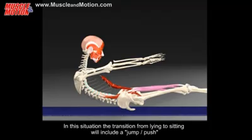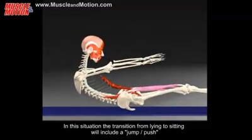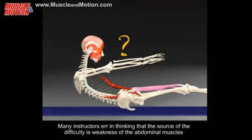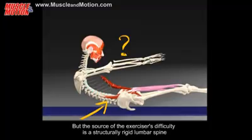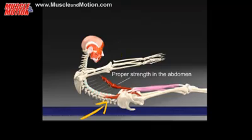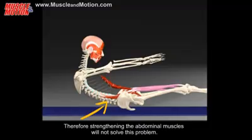Without a sequential arch it is simply impossible to perform the exercise properly. In this situation the transition from laying to sitting will include a jump or push. Many instructors err in thinking that the source of the difficulty is weakness of the abdominal muscles, but the source of the difficulty is a structurally rigid lumbar spine. Proper strength in the abdomen cannot limit structural rigidity, therefore strengthening the abdominal muscles will not solve this problem.